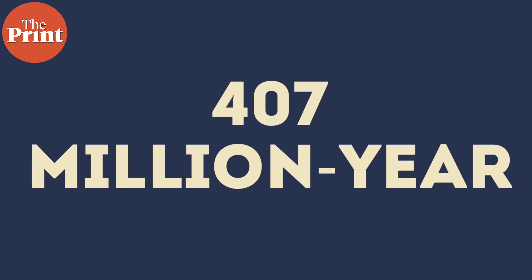Why Fibonacci spirals, also known as nature's secret code, are so common in plants has perplexed scientists for centuries, but their evolutionary origin has been largely overlooked. Based on their widespread distribution, it had long been assumed that Fibonacci spirals were an ancient feature that evolved in the earliest land plants and became highly conserved. However, research led by the University of Edinburgh has overthrown this theory with the discovery of non-Fibonacci spirals in 407-million-year-old plant fossils.